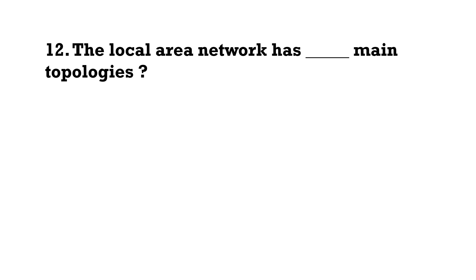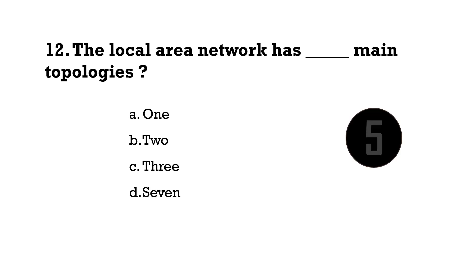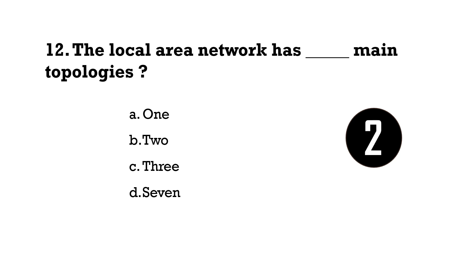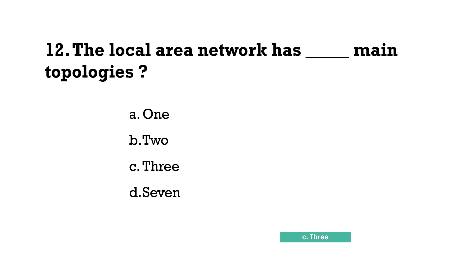The local area network has how many main topologies? The answer is 3 — bus, star, and ring.